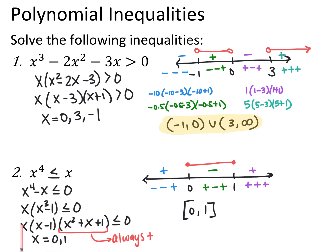What makes this equal to 0 is x equals 0 and x equals 1. The quadratic factor x squared plus x plus 1 has no real solutions, so nothing extra goes on the number line. That factor is always positive, so I don't need to worry about it. Testing values: less than 0 gives negative times negative times positive — positive. Between 0 and 1, like 0.5, gives positive times negative times positive — negative. Greater than 1, all factors are positive. Since I want less than or equal to 0, I use closed circles and take the interval from 0 to 1 included.